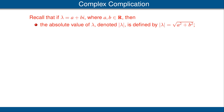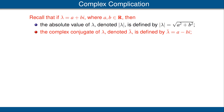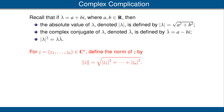Recall that if lambda is a complex number, then the absolute value of lambda is defined to be the square root of the sum of the squares of the real part and the imaginary part of lambda. The complex conjugate of lambda is defined by multiplying the imaginary part by negative one. And we have the extremely useful identity that the absolute value of lambda squared is equal to lambda times the complex conjugate of lambda. For z a vector in Cn, we define the norm of z to be the square root of the sum of the squares of the absolute values of the coordinates.